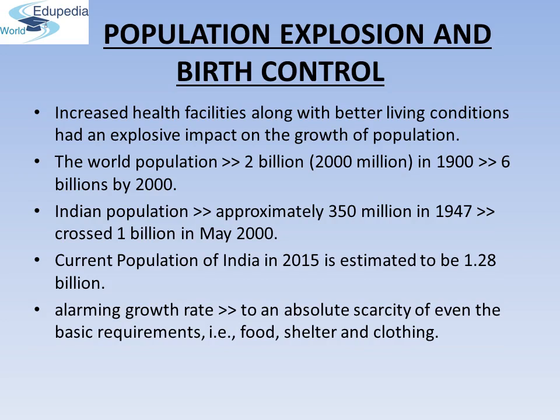That means every sixth person in the world is an Indian. A rapid decline in death rate, maternal mortality rate (MMR), and infant mortality rate (IMR), as well as an increase in the number of people in the reproductive age group, are probable reasons for this. The current population of India in 2015 is estimated to be 1.28 billion. Such an alarming growth rate could lead to an absolute scarcity of even the basic requirements — i.e. food, shelter, and clothing — in spite of all the significant progress made in those areas.